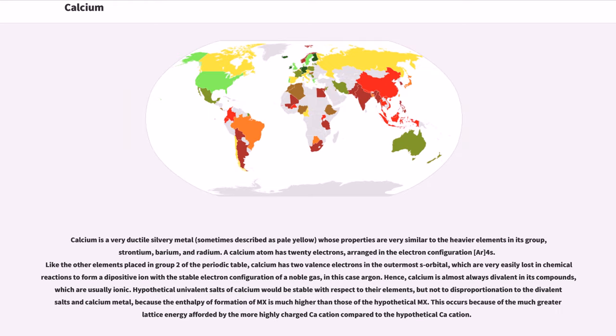Calcium is a very ductile silvery metal, sometimes described as pale yellow, whose properties are very similar to the heavier elements in its group: strontium, barium, and radium. A calcium atom has 20 electrons arranged in the electron configuration Ar 4s².